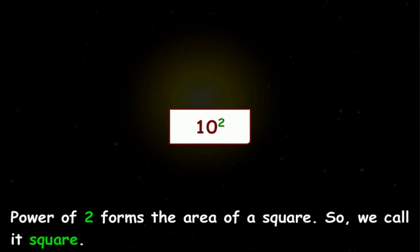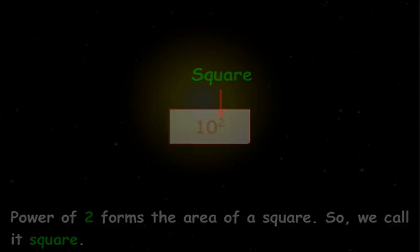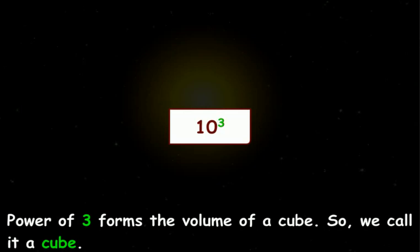Power of 2 forms the area of a square. So, we call it square. Power of 3 forms the volume of a cube. So, we call it a cube.